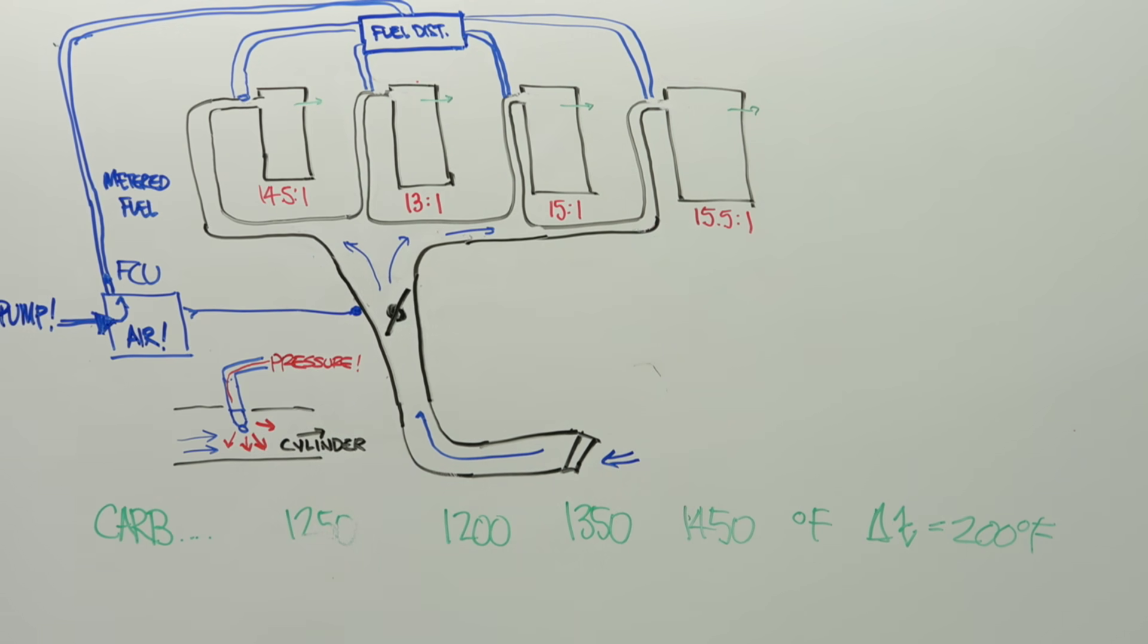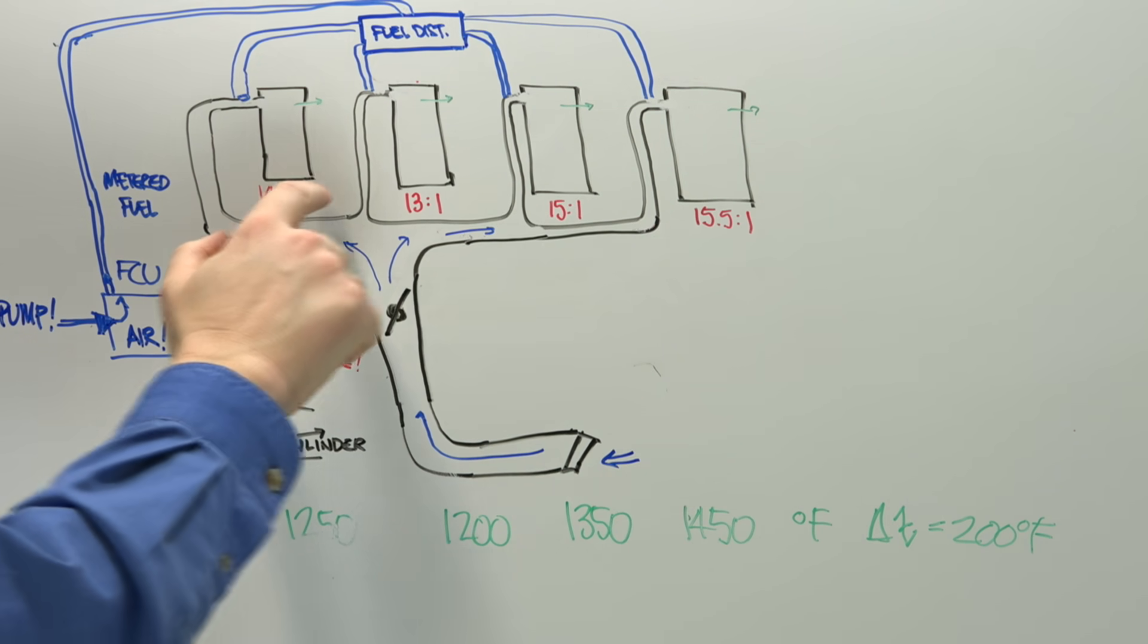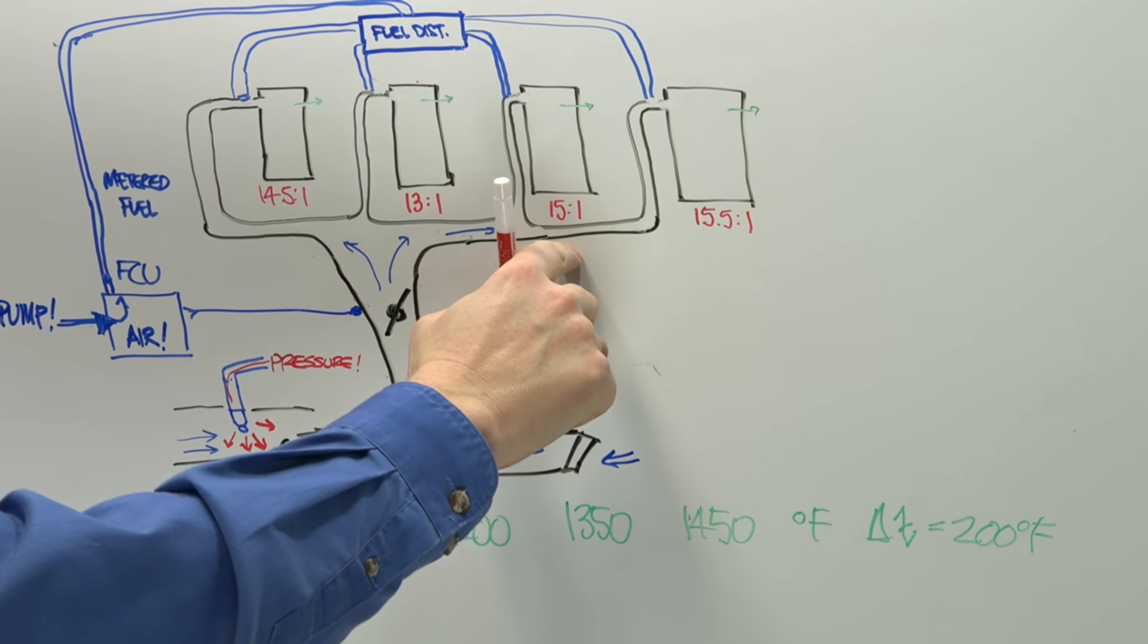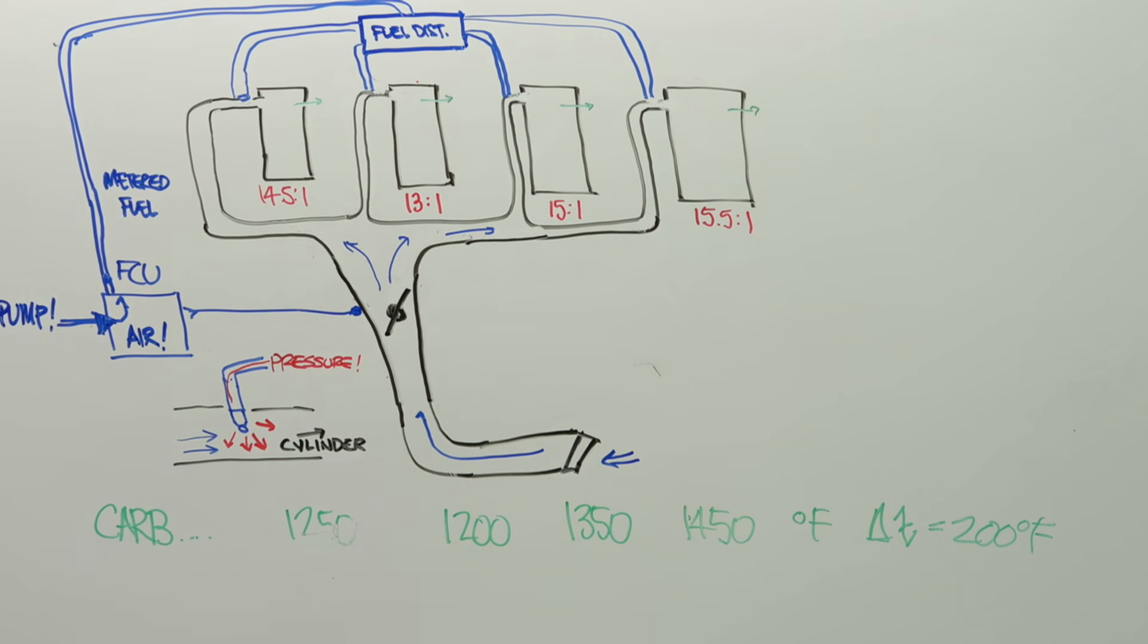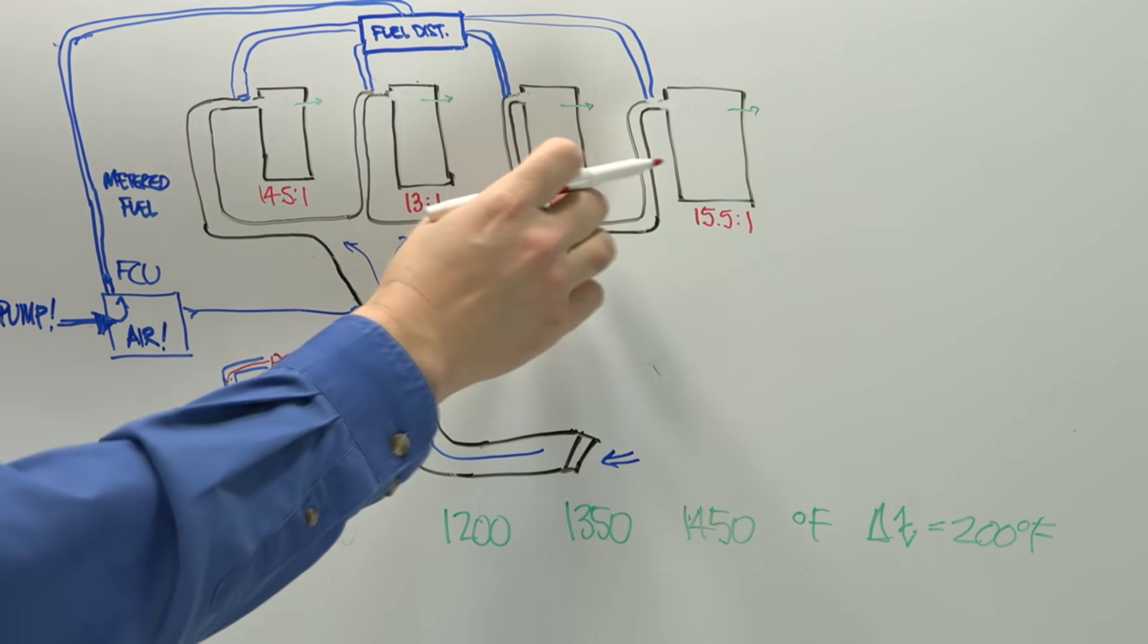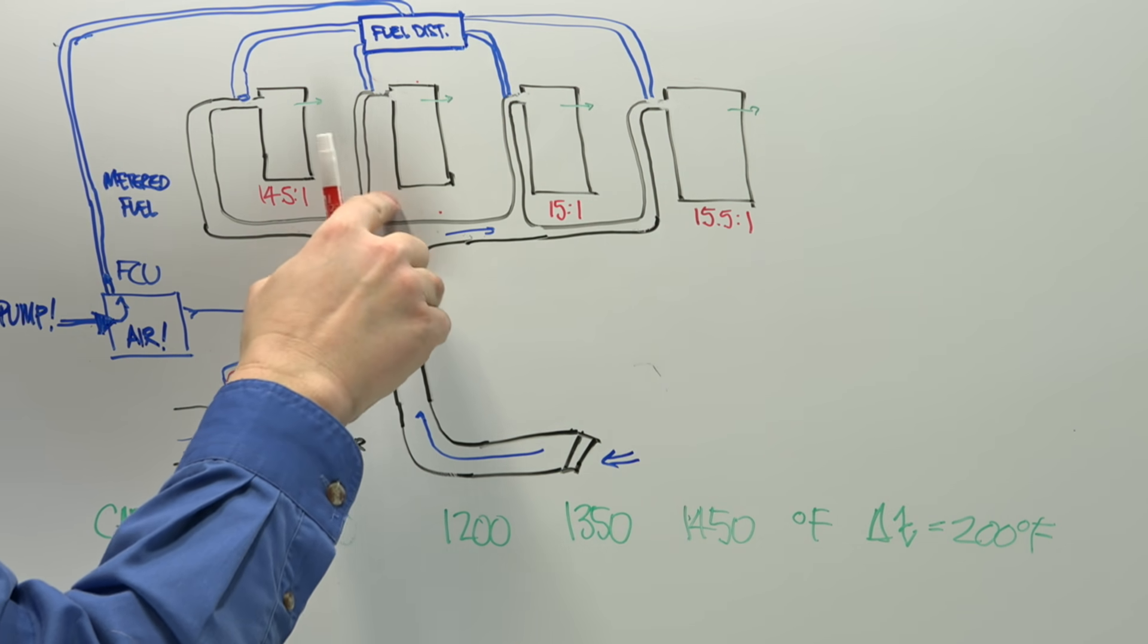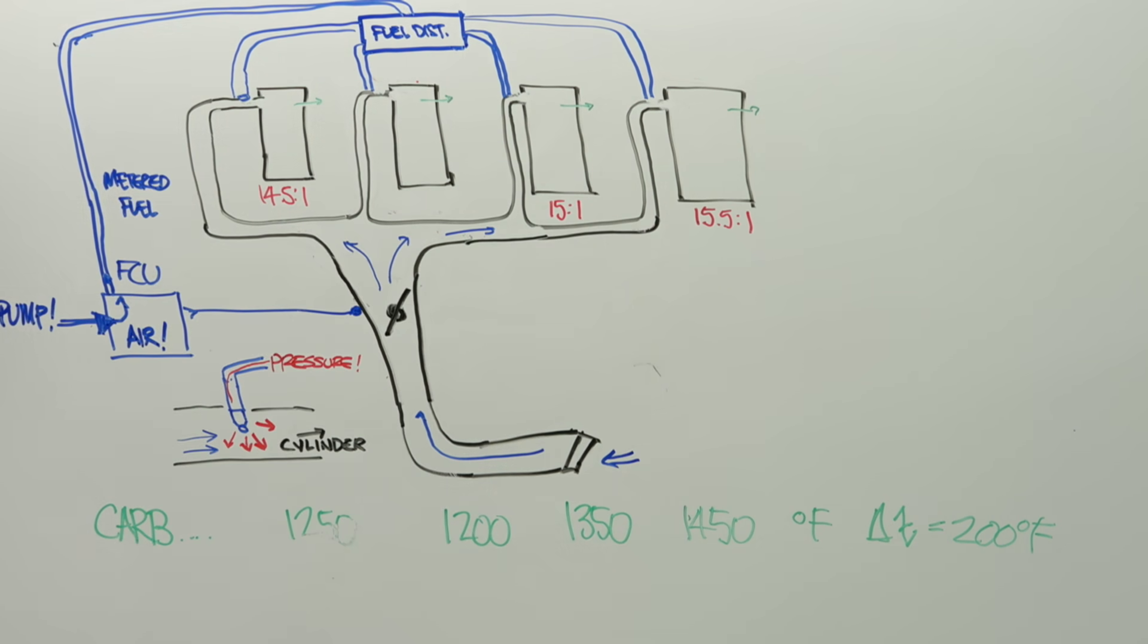So let's say that you, as a pilot, set your mixture to the perfect stoichiometric value, 15 to 1. So this cylinder over here might be actually running at, let's say, 14.9 to 1.